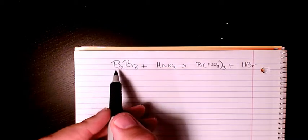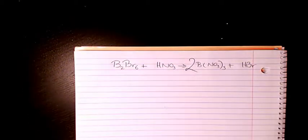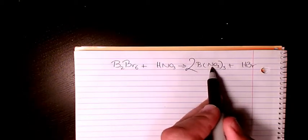We have two B here and one here, so it's better to put a 2 to balance it. NO3, NO3.